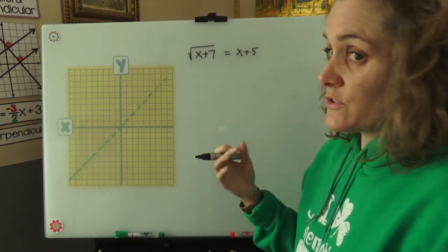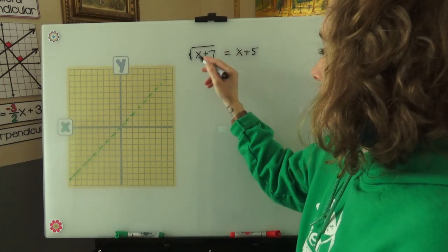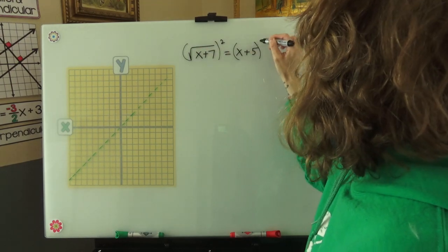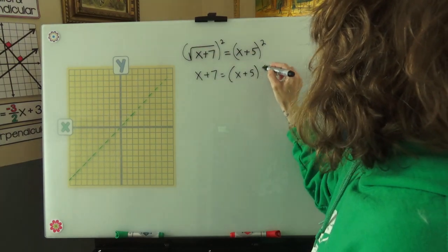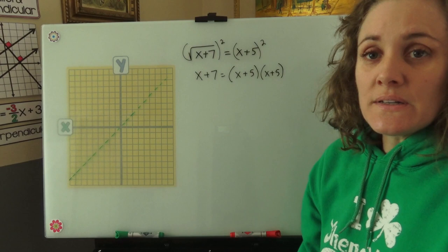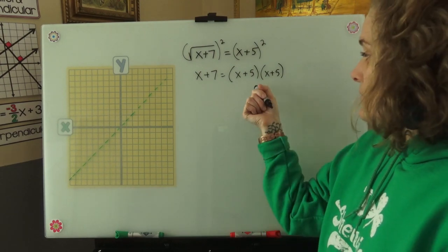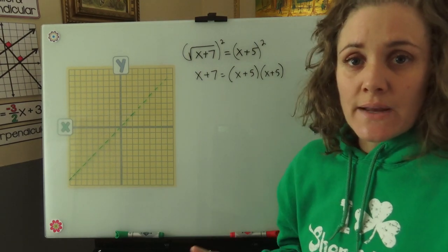So first we would need to square both sides to get rid of the radical sign. And then we'd need to distribute the right side to put it into standard form.